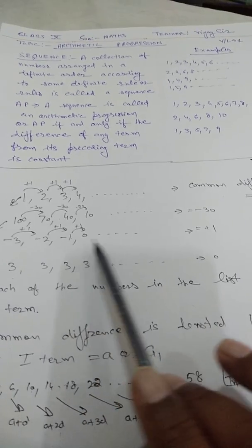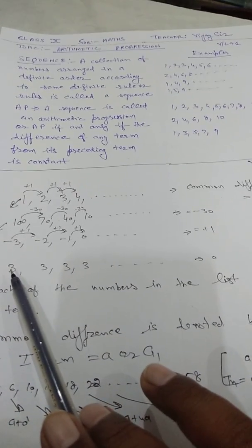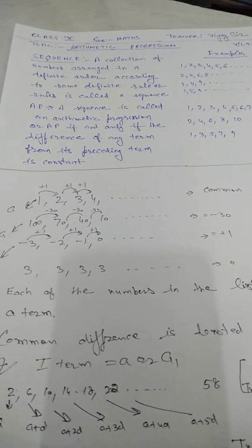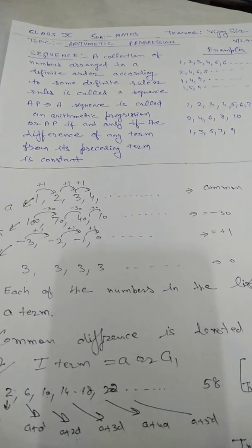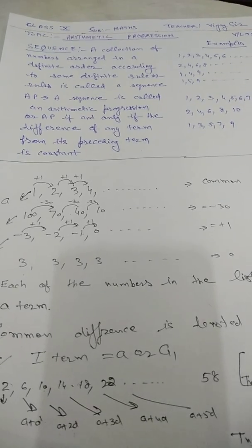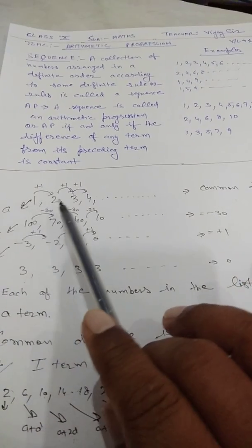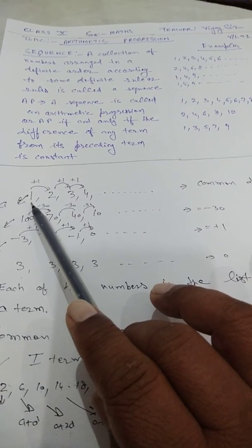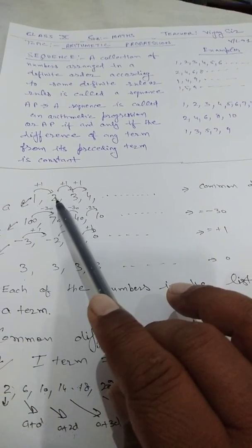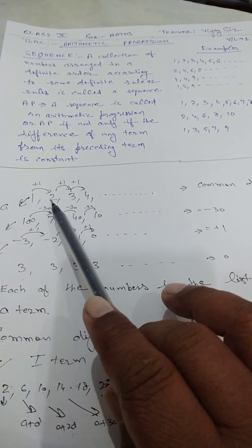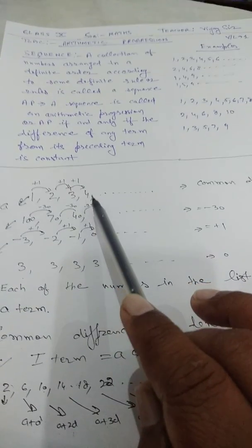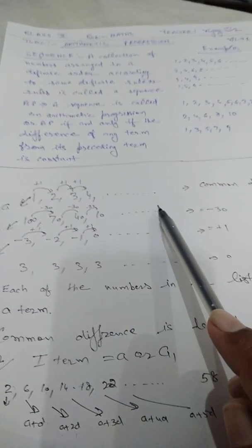Next: 3, 3, 3, and so on. You see, if we add 1 to the first term, we get 2. If we add 1 again, we get the third term. We add 1 again, then we get 4, and so on.